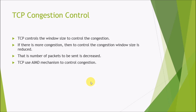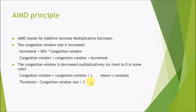TCP uses the AIMD mechanism to control congestion. AIMD stands for Additive Increase Multiplicative Decrease. The congestion window size increases additively. The increment formula is: increment = MSS × (MSS / current congestion window size). The maximum segment size is the maximum size of a segment which doesn't need to be fragmented. The new congestion window size equals the previous congestion window size plus the increment.